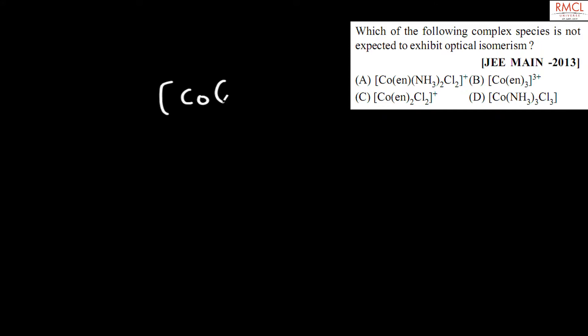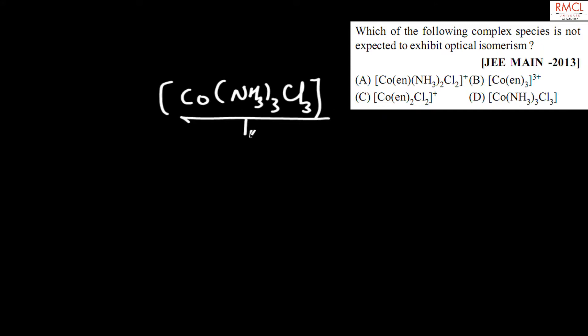The compound Co(NS₃)(Hall₃)Cl₃ will not exhibit optical isomerism because it possesses a plane of symmetry. Because in this compound, the plane of symmetry is present, that is why it does not show optical isomerism.